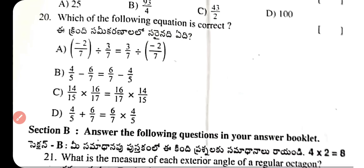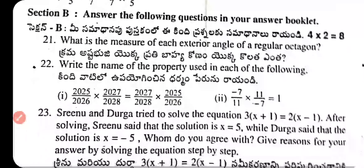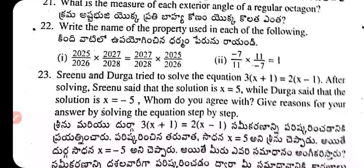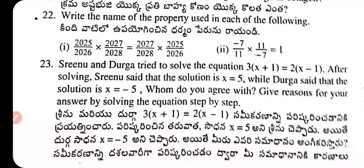Section B — Answer the following questions. Question 21: What is the measure of each exterior angle of a regular octagon? Also, write the names of the properties used in the following: (i) (2025/2026) × (2027/2028) = (2027/2028) × (2025/2026); (ii) (−7/11) × (11/−7) = 1.